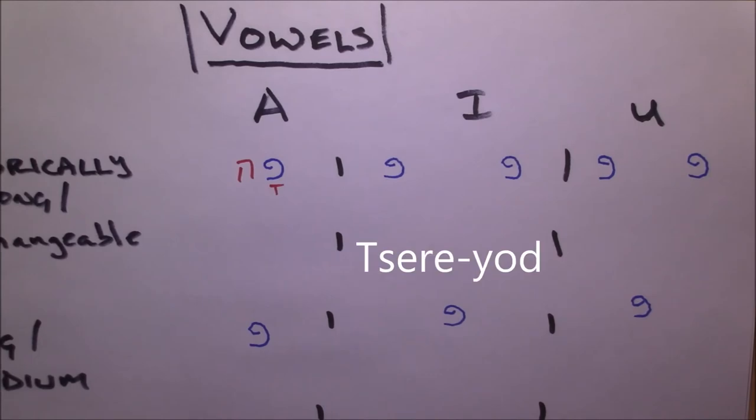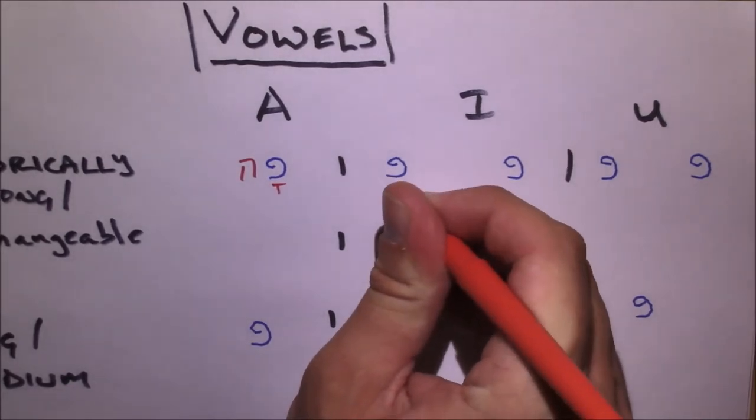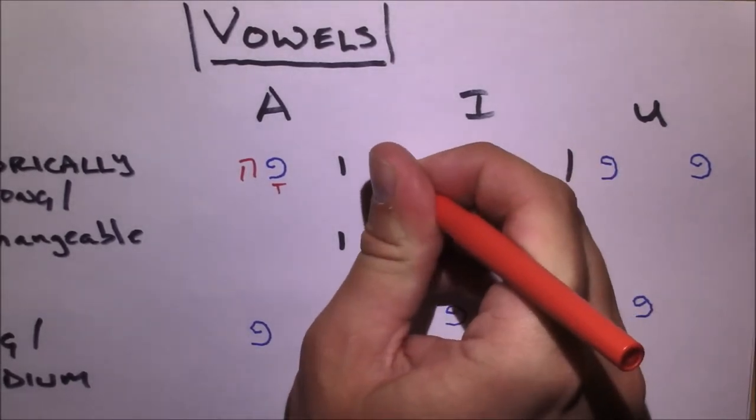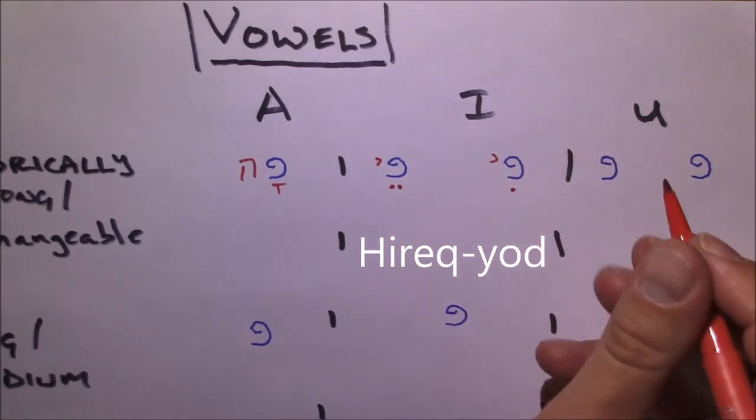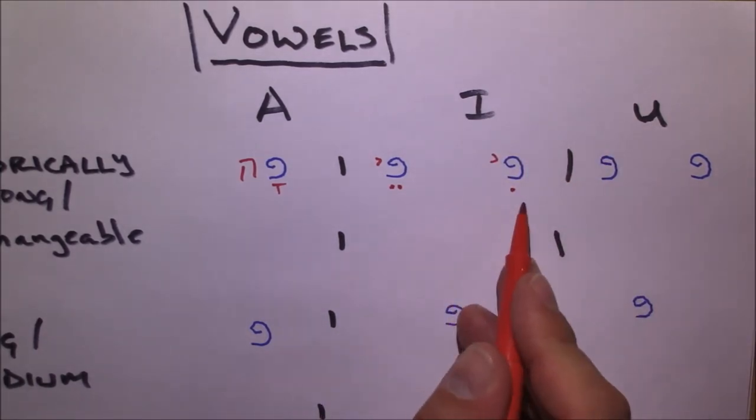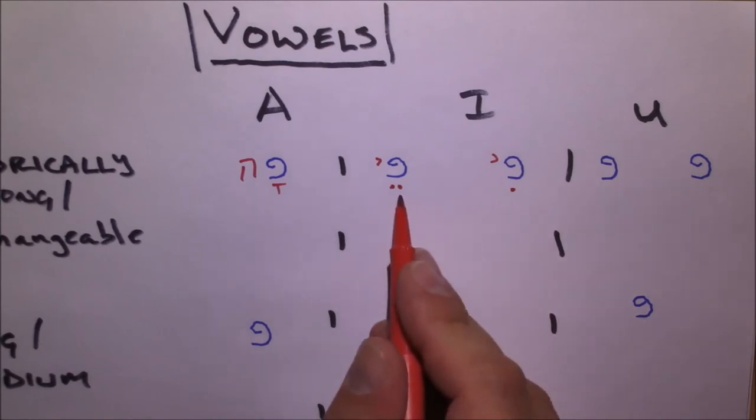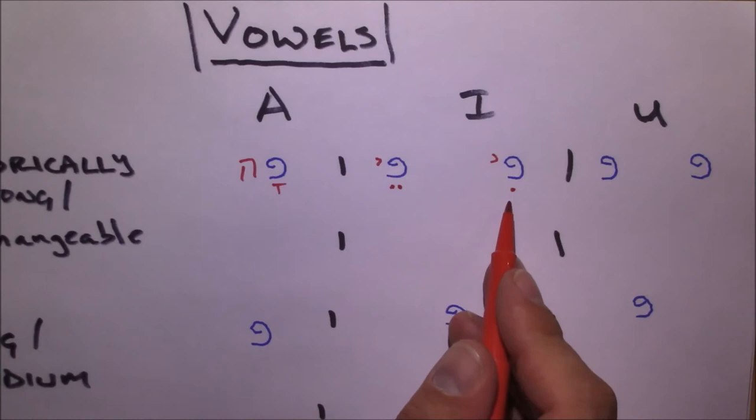In our I class, we have two different ones. We have our tsere yod, which once again is named because it's tsere and yod, and our hirak yod. And these are pronounced a and e. The tsere yod is a, the hirak yod is e.